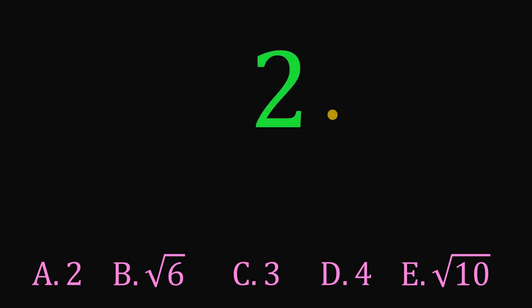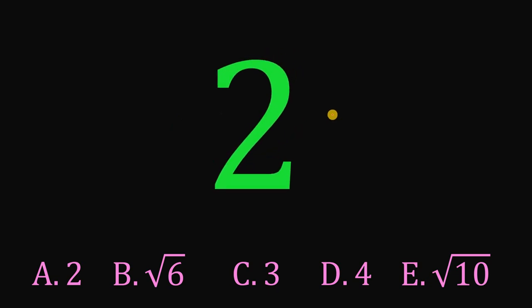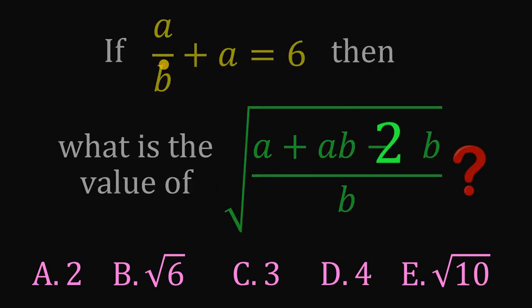Therefore, our answer to this question must be equal to 2. So, it's very simple. So, if a over b plus a equals 6, then the value of square root of a plus ab minus 2b all over b must be equal to 2. And that is our answer to this question.